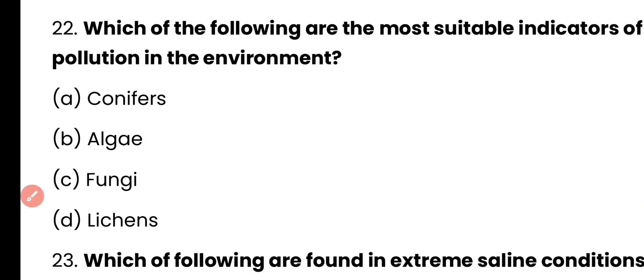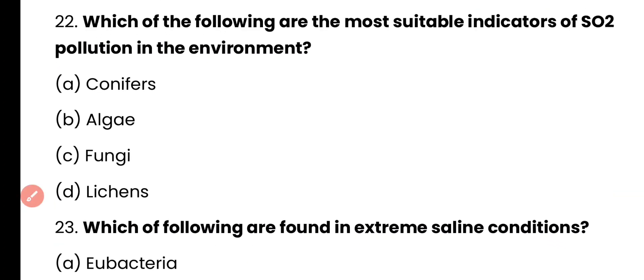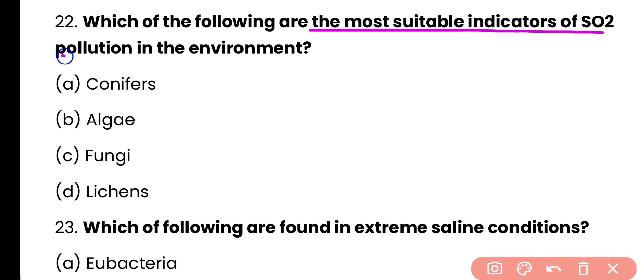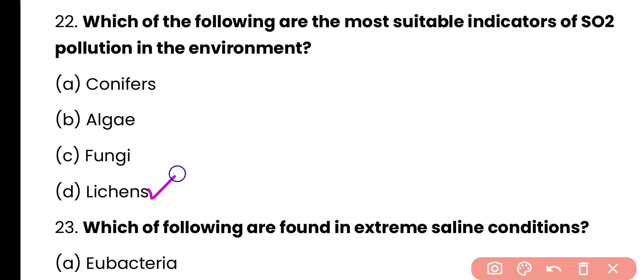Question number 22. Which of the following are the most suitable indicators of sulfur dioxide pollution in the environment? Conifers, algae, fungi, or lichens? Correct answer is option D. Lichens are a good indicator of sulfur dioxide pollution in the environment; they cannot grow in an area where sulfur dioxide pollution is present.